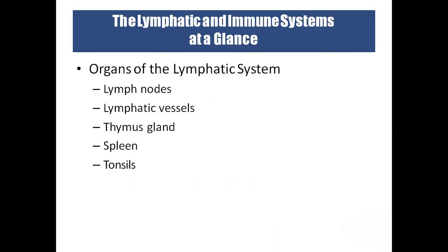Coming to the organs of the lymphatic system: the organs containing lymphocytes and macrophages are called lymphoid tissues. These include lymph nodes, lymphatic vessels, thymus gland, spleen, and tonsils. All these come under the lymphatic system, which consists of lymphocytes.